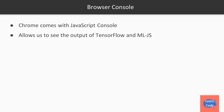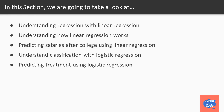The Chrome browser comes with a JavaScript console and allows us to see the output of TensorFlow as well as the ML.js library outputs. In this section, we are going to look at understanding regression with the help of linear regression, see how linear regression works, use linear regression to predict salaries after college, then go into logistic regression and use it for classification, and see an example of predicting treatment cases using logistic regression.